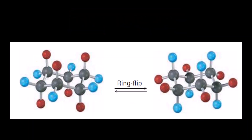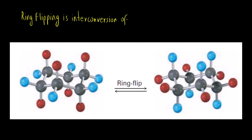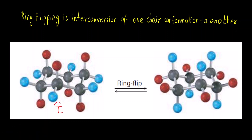Let us first understand the definition of ring flipping. Ring flipping is the interconversion of one chair conformation to another at room temperature. At room temperature there is enough thermal energy to convert one conformation to another — the ring gets flipped, or inverted, into another conformation of cyclohexane.